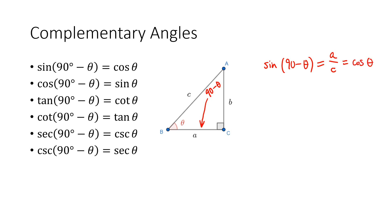Because for the theta angle, little a is the adjacent side. So all we're doing is saying if you switch to the other acute angle in your right triangle, the functions switch. So the sine of 90 minus theta is the cosine of theta. Similarly, the cosine of 90 minus theta is the sine of theta. The tangent of 90 minus theta turns out to be the cotangent of theta, and so on.